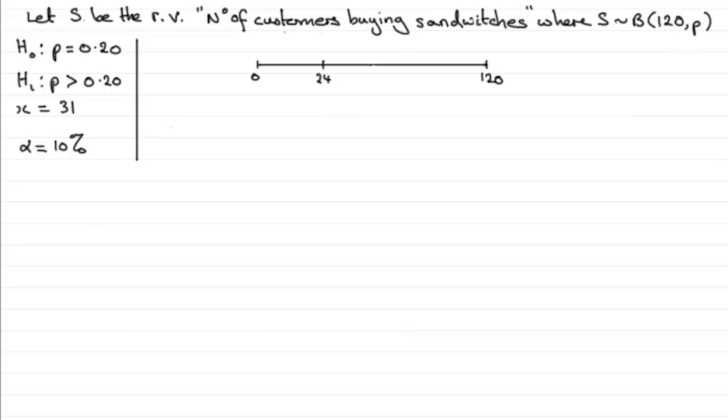The critical value method says that if we've got a value, let's say R, we're expecting values around the mean here at 24. But there comes a point where when we exceed this value of R we reject H₀. So at this point here we reject H₀. In this region we accept H₀. So we need to find that value of R.